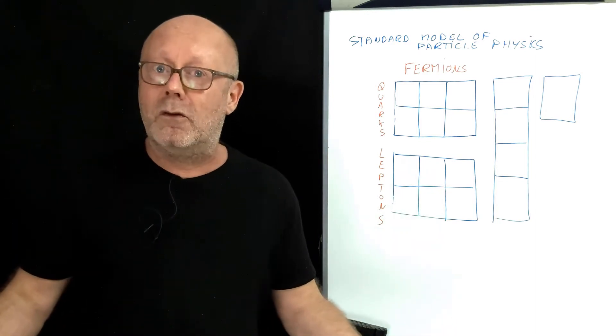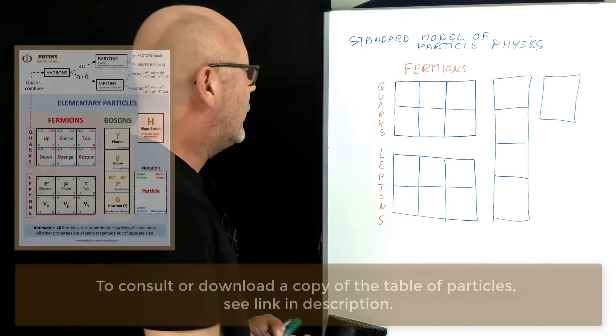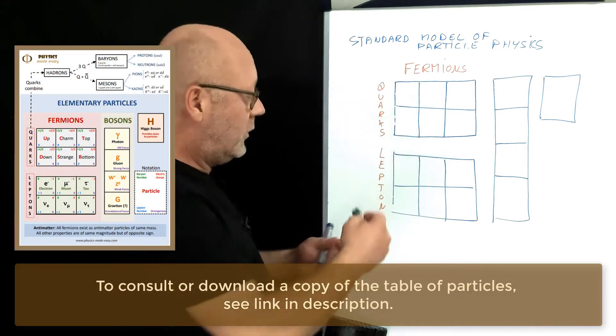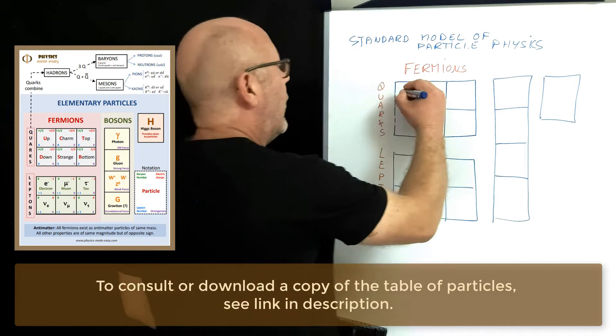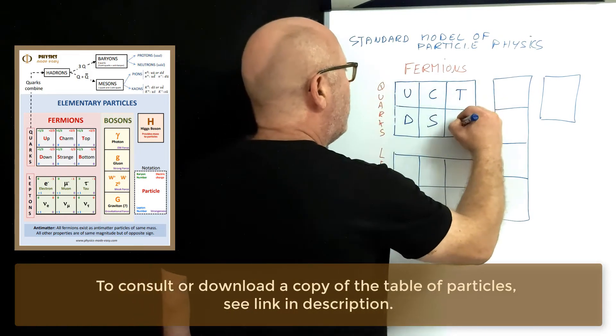Yes, all the matter around you, all the matter in the universe, is made of fermions. You have 6 quarks and these quarks are called up, down, charm, strange, top and bottom.